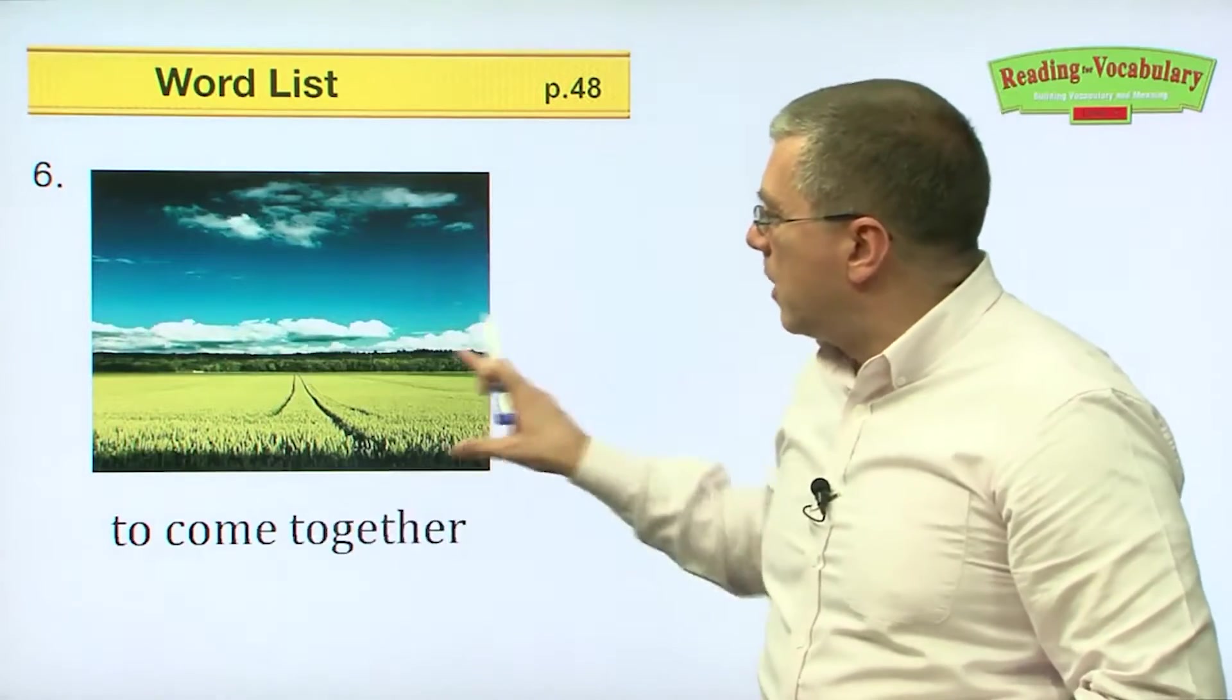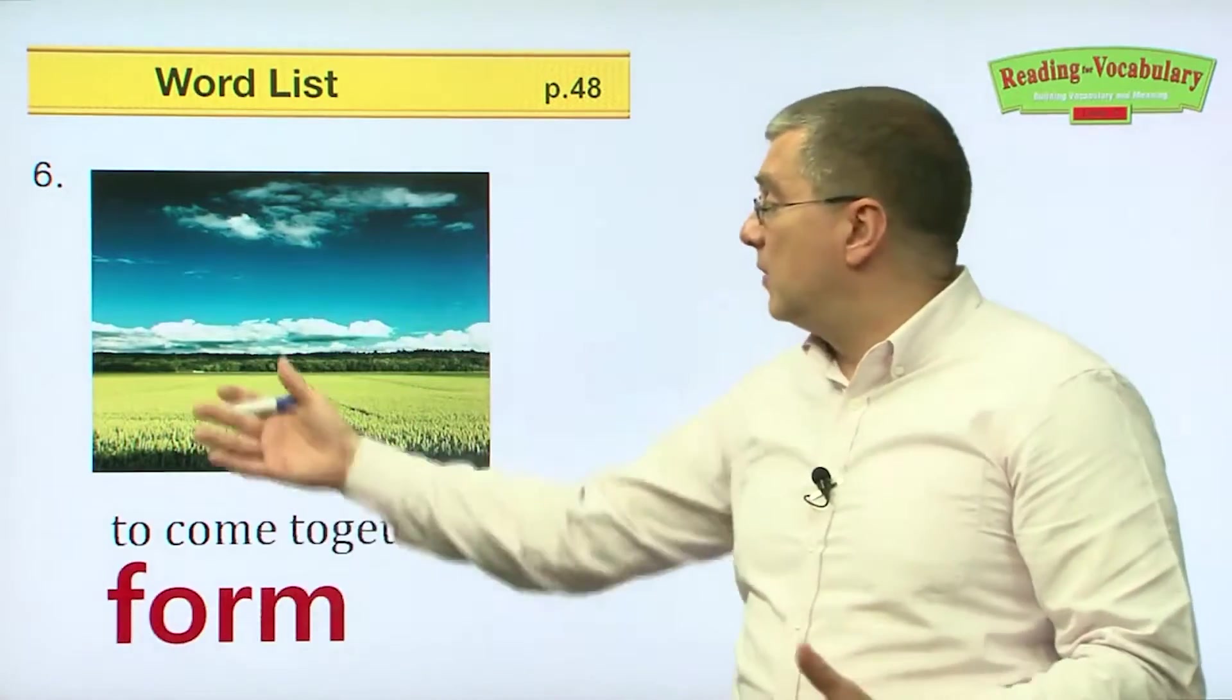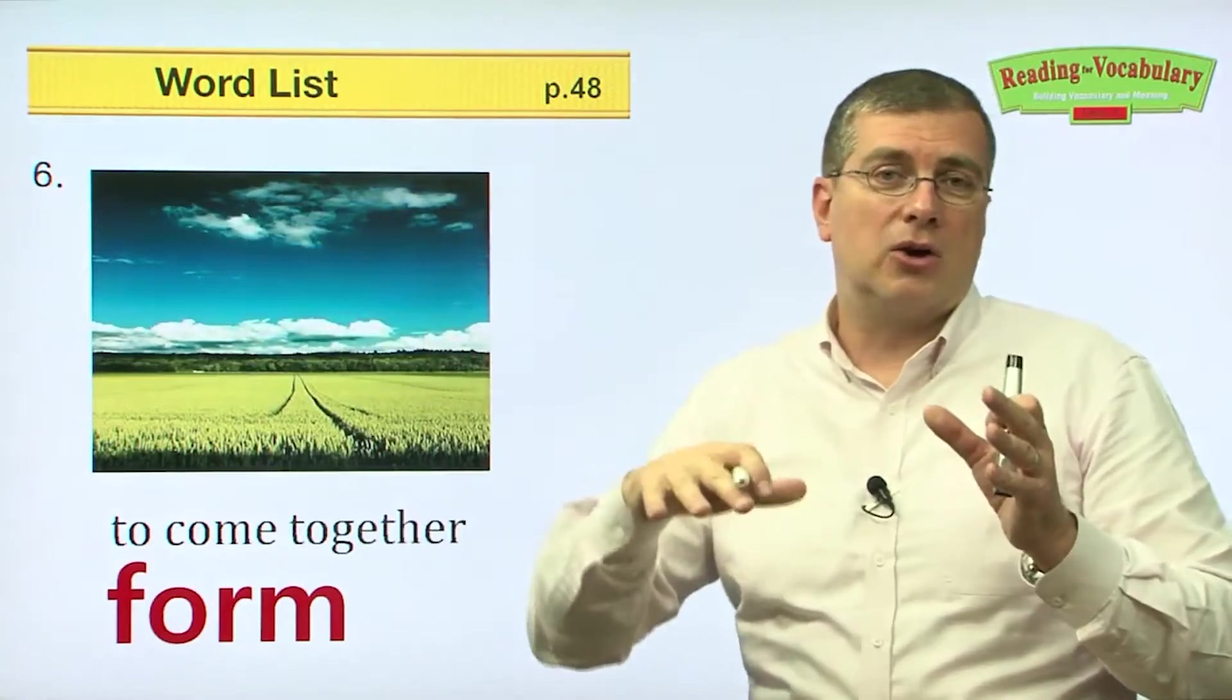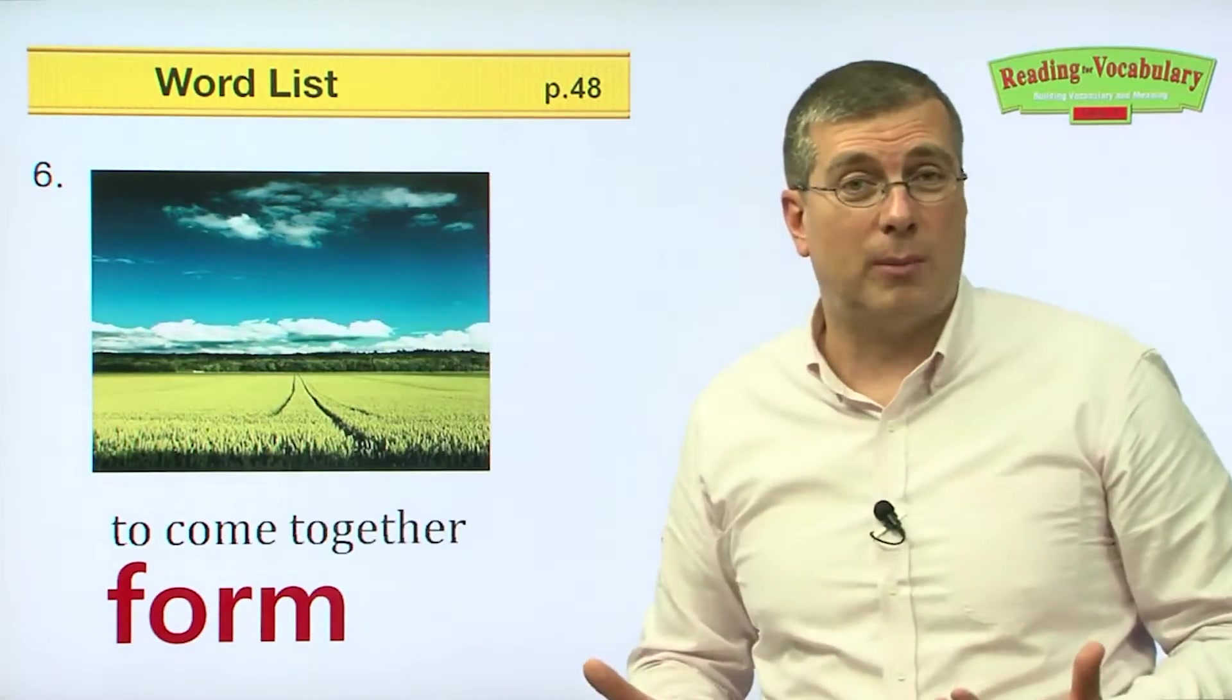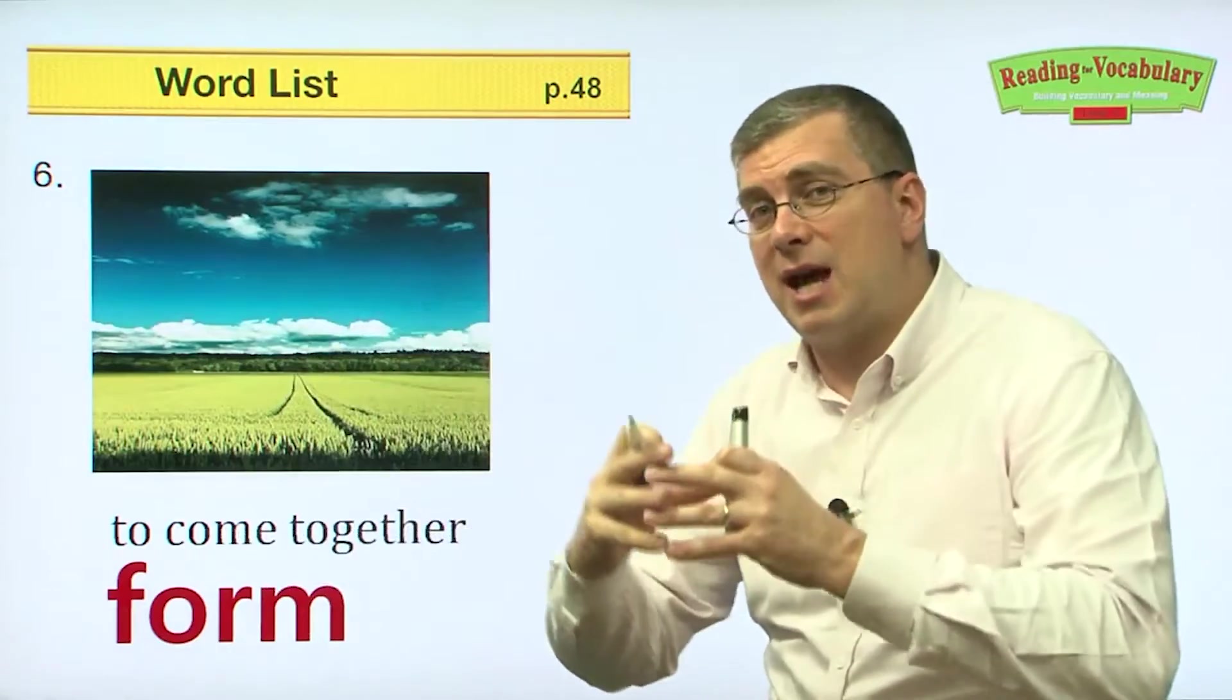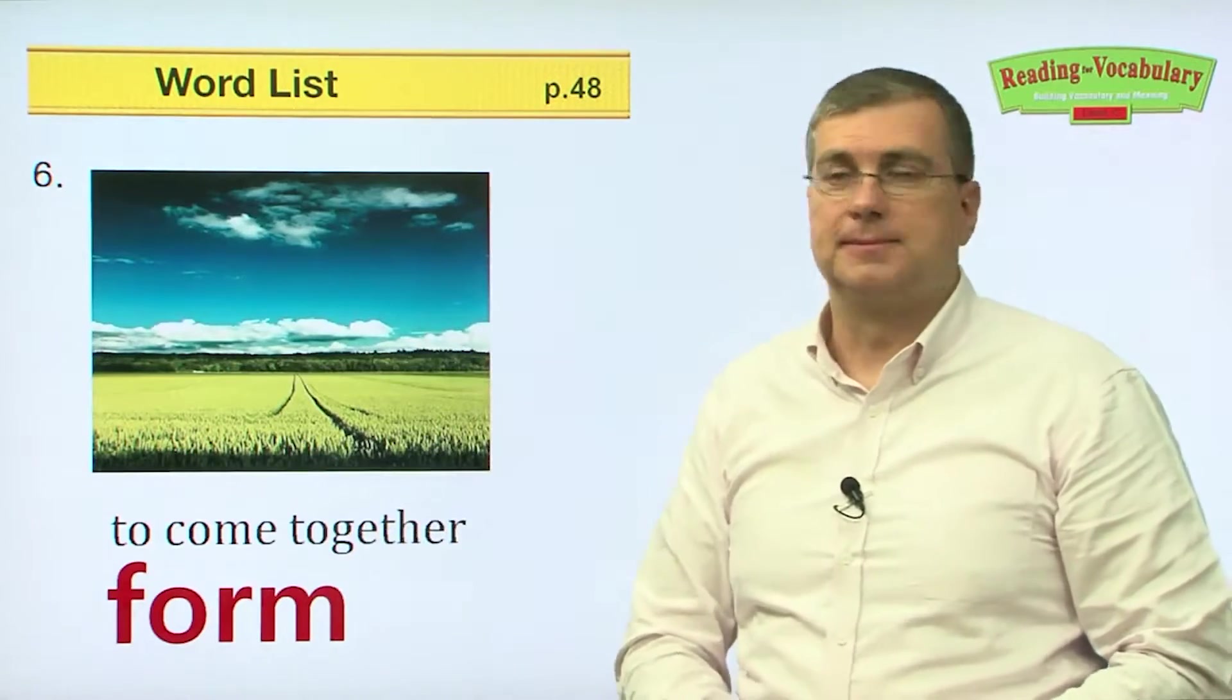Number six. To come together. When things come together, what do they do? They form something. So they form a field. They might form a landscape. When you put wood and concrete and other materials together, you can form a house or a building. It's when you have many things or materials come together, they form or make or create some other thing. They form something.